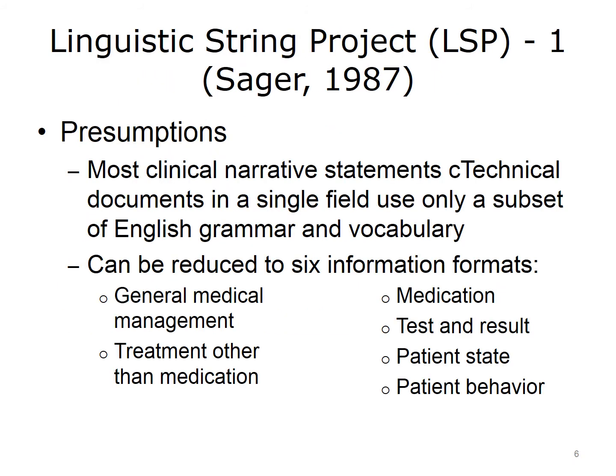The Linguistic String Project was one of the first large-scale attempts to do NLP over clinical text. The project was started by Sager and colleagues in the 1980s, based on work she and her colleagues had done in analyzing clinical documents. There were some presumptions about clinical documents: technical documents in a single field such as medicine used only a subset of English grammar and vocabulary, called a subgrammar. In analyzing large numbers of documents, it was believed that essentially all statements in clinical documents could be reduced to one of six information formats.